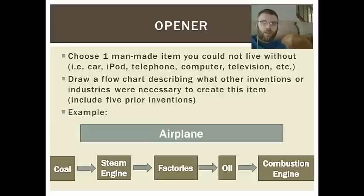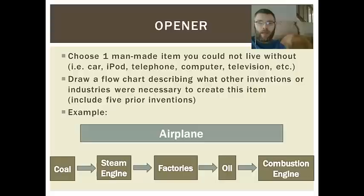I know we haven't talked about this yet. Hopefully you remember a little bit from class today. As sort of an opener to these notes — I know we don't traditionally use that in the flipped classroom — this is going to be your homework assignment, the thing that I check when you come into class. I want you to choose one item that you could not live without. For most of you, that's going to be your iPod or your computer, video game, anything you can think of. I want you to start with that item and create a flowchart describing what other inventions were needed in order for that item to be created.